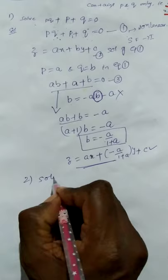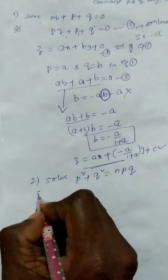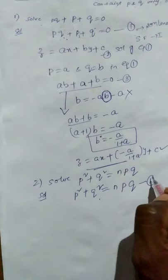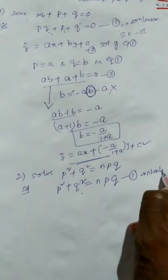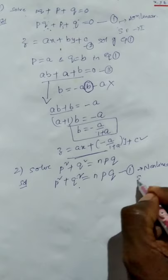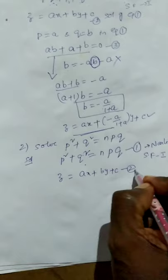Now we go to the second problem. Solve: p² + q² = n·pq. This is taken as equation 1. First, we check whether it is linear or non-linear. Since the degree of p and q are 2, it is non-linear. We check whether it belongs to standard form 1 or not. Since this PDE contains p and q only and does not contain x, y, z, it belongs to standard form 1. We consider z = ax + by + c as the complete solution of equation 1.